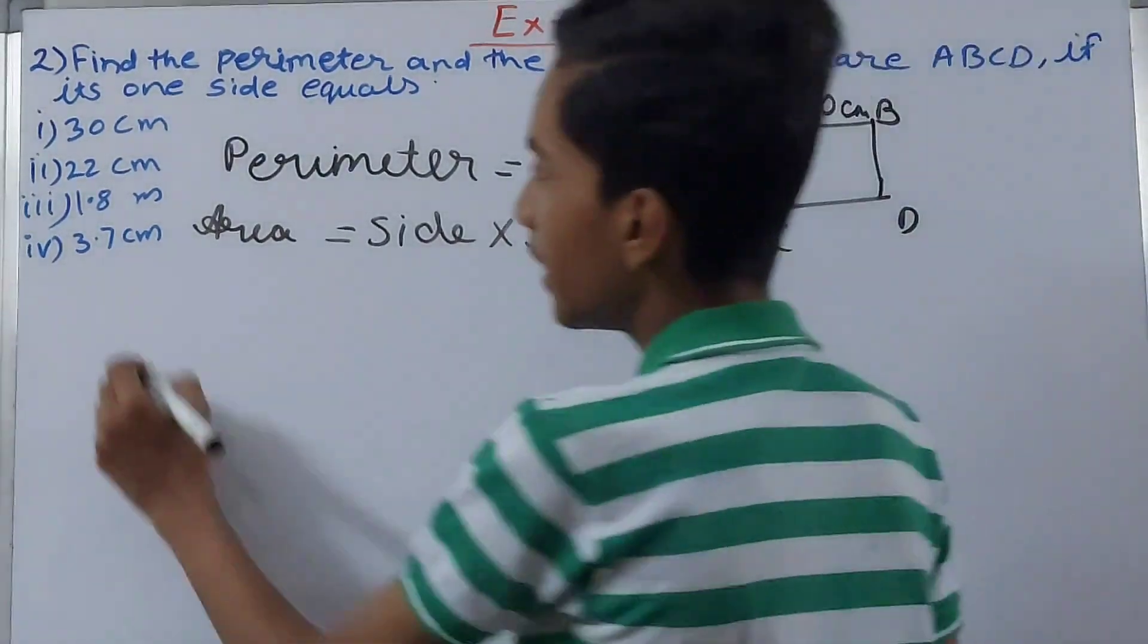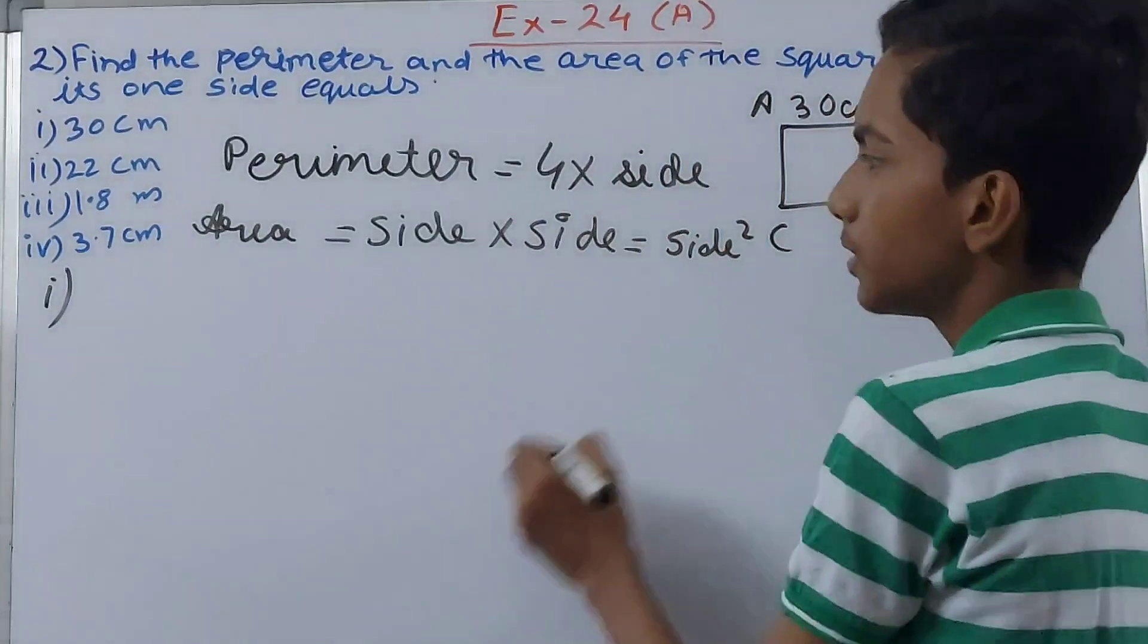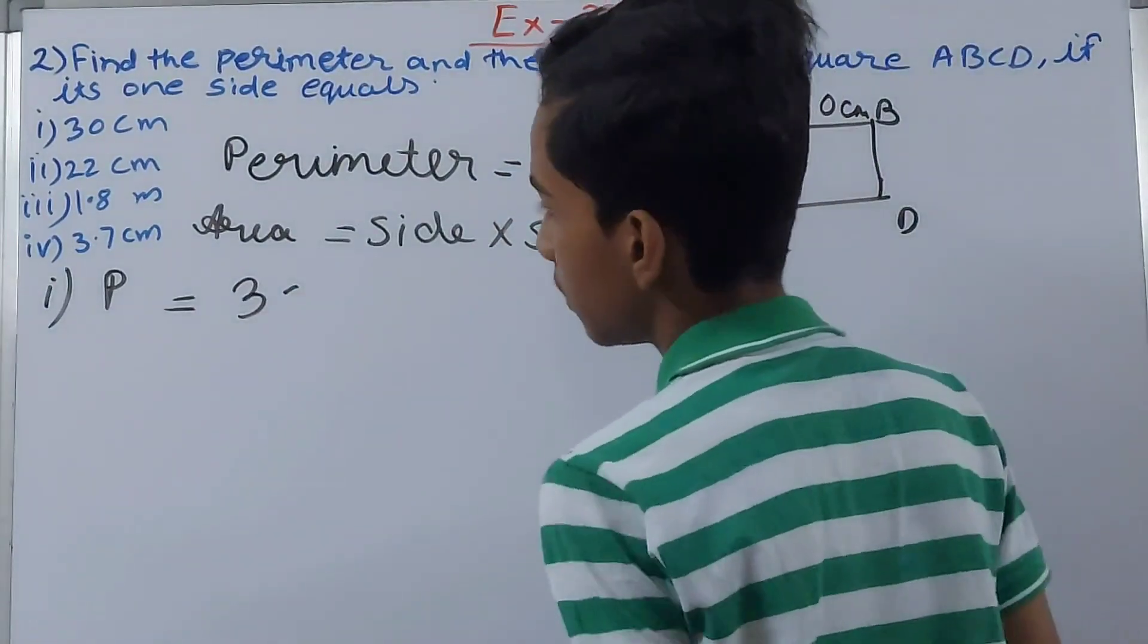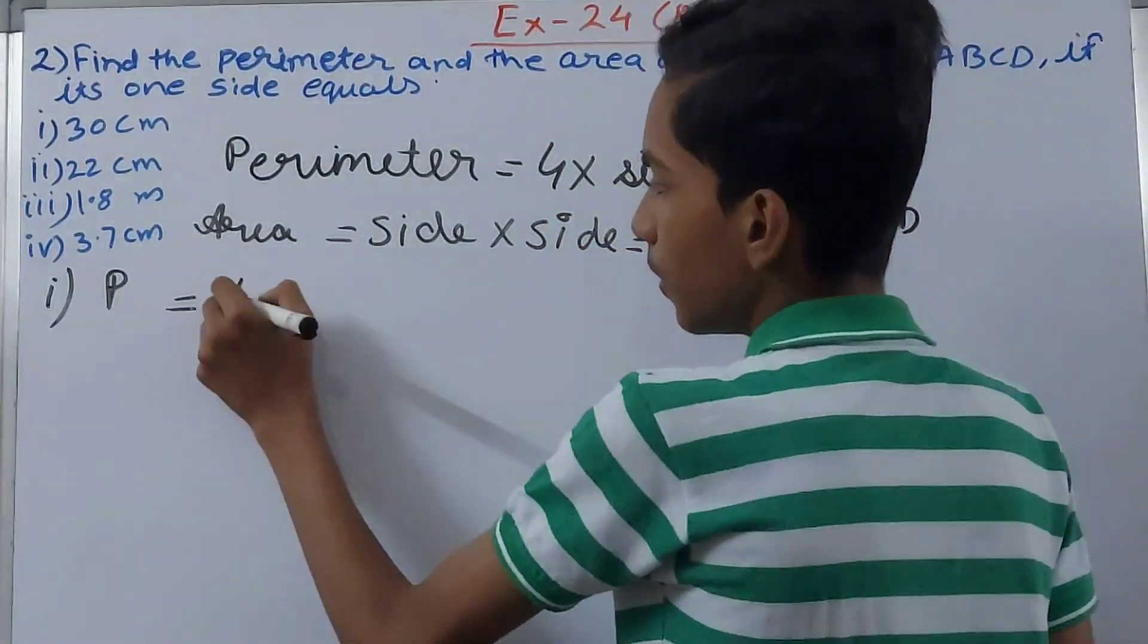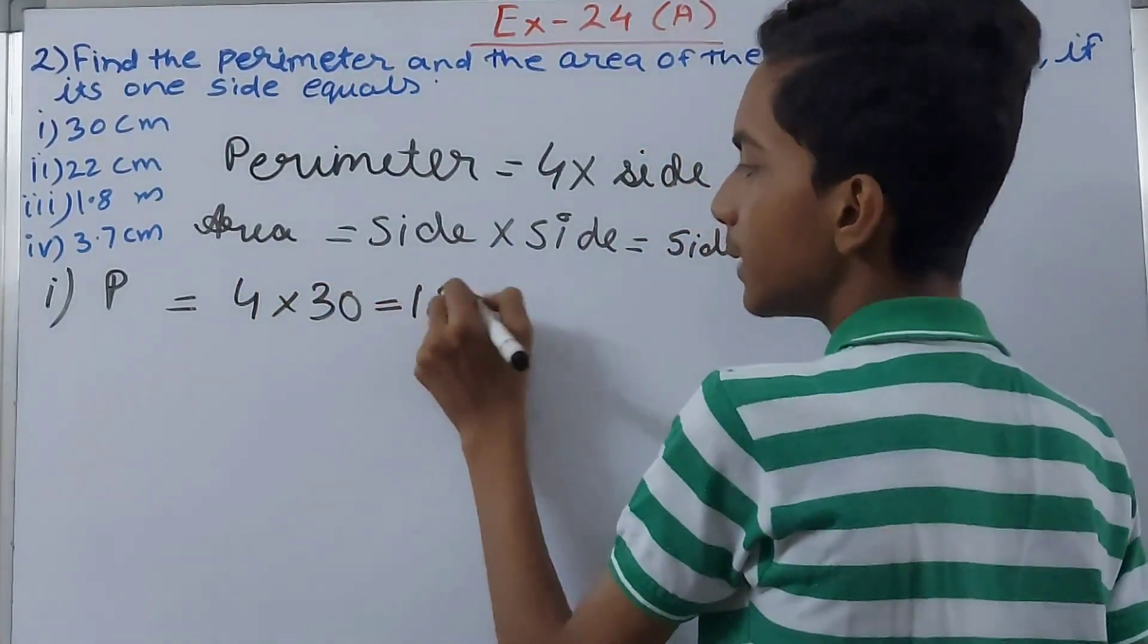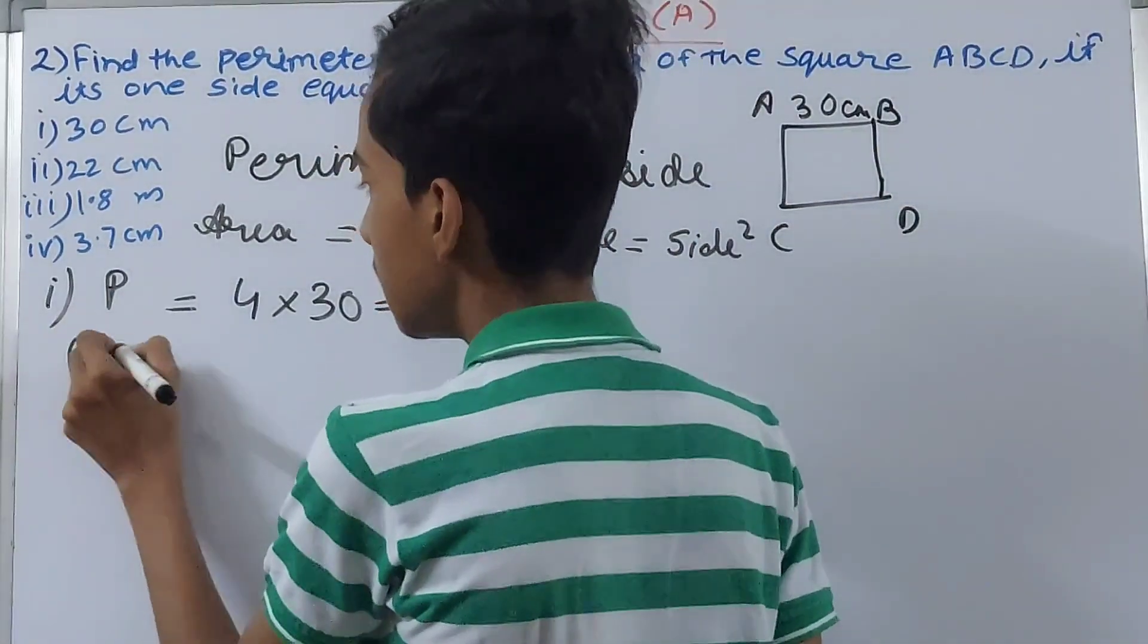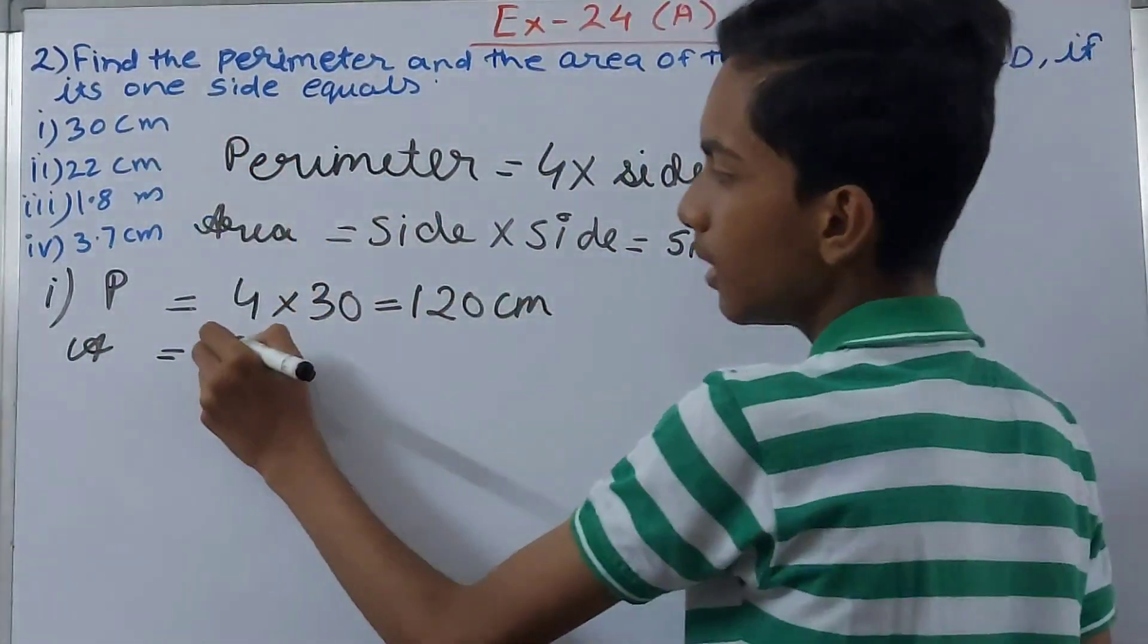Now in the first part we have 30 centimeter as the side. So for perimeter, P becomes 4 into 30, that will be 120 centimeter. And the area, area is side into side, so 30 into 30, that is 900 centimeter square.